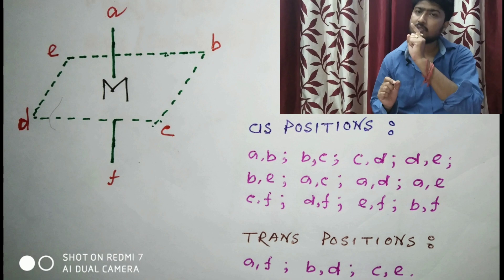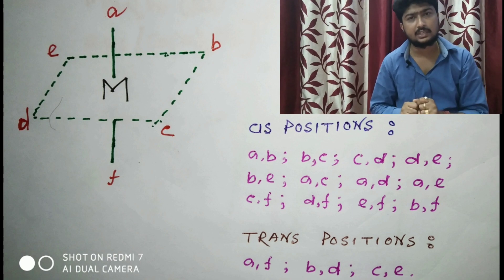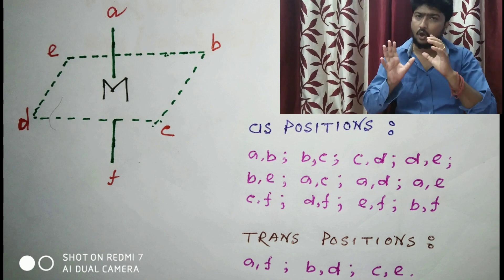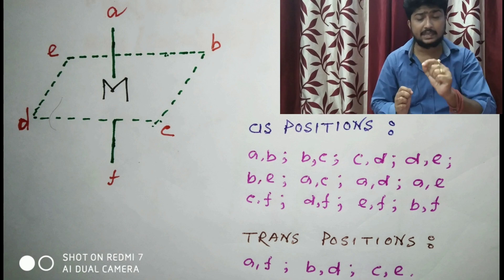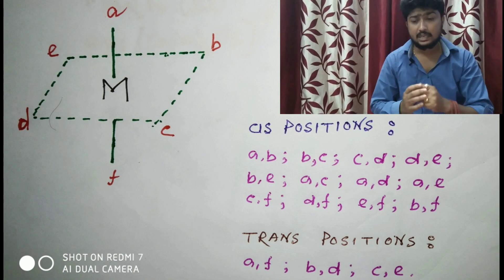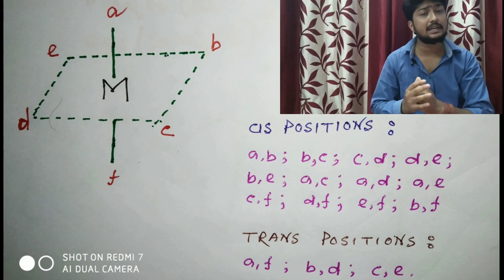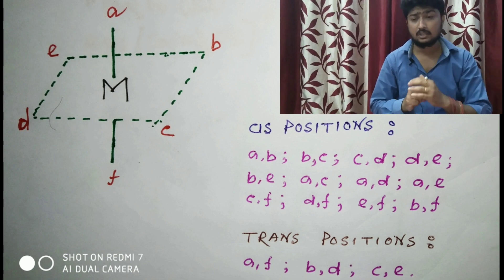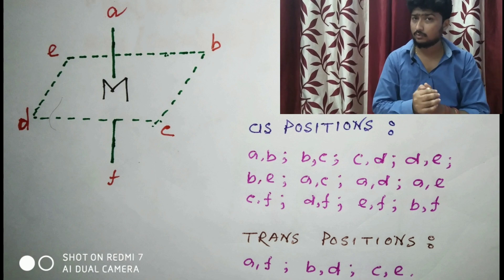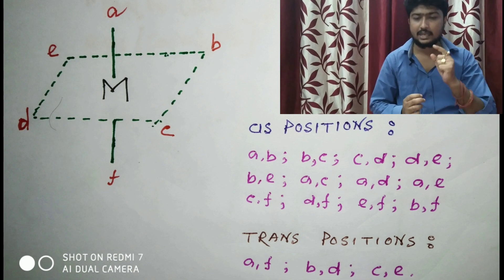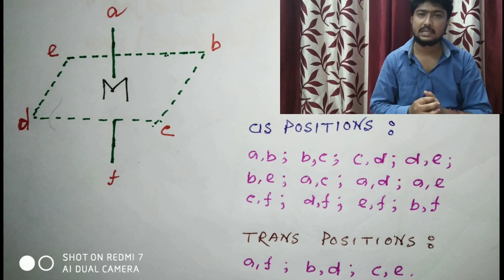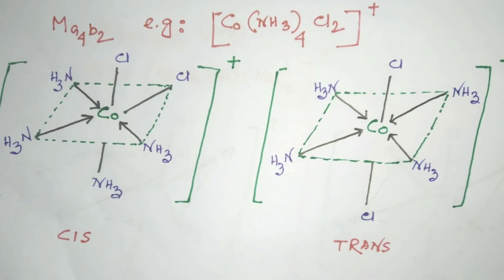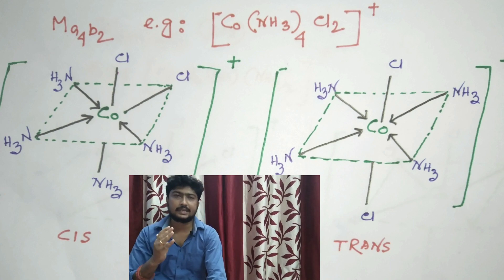In the cis positions, A remains 90 degrees with B, C, D, and E — these are all cis positions. Similarly, B and E, B and C, B and D, C and F, D and F, E and F, B and F are also cis positions. For a trans isomer, two ligands should be at 180 degrees: A–F, B–D, and C–E are all trans positions.